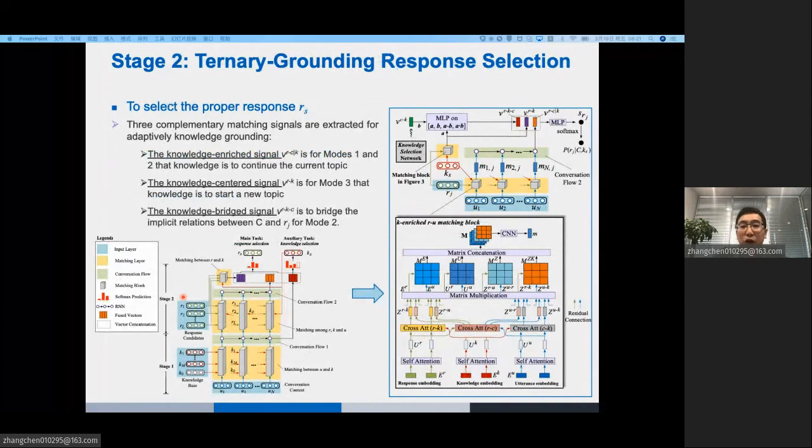After we select the proper knowledge, we have stage 2, a ternary grounding network to select the proper response. Based on the three conversation modes talked before, we extract three matching signals for adaptive knowledge grounding. The first signal, called knowledge-enriched signal, is from the matching between C and R, enriched by K, for modeling the responses in modes 1 and 2. The second signal, called knowledge-centered signal, is from the matching between K and R, for modeling the responses in mode 3.